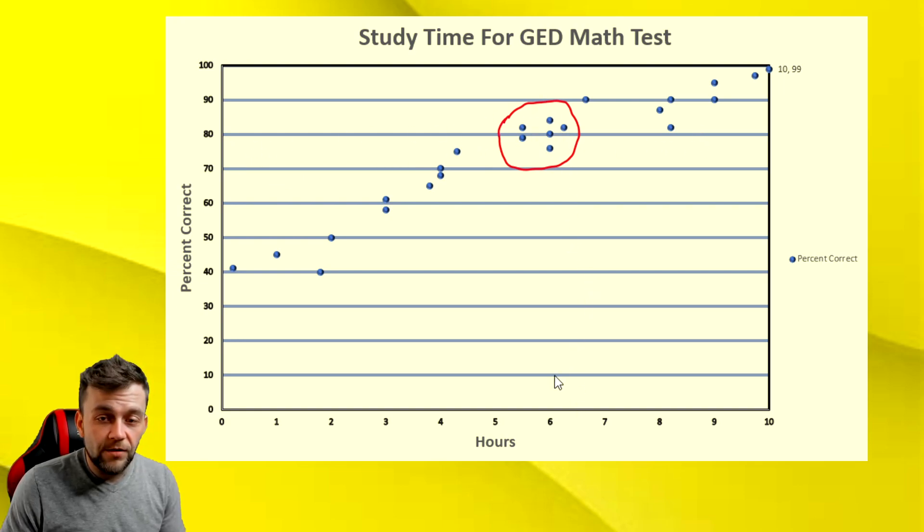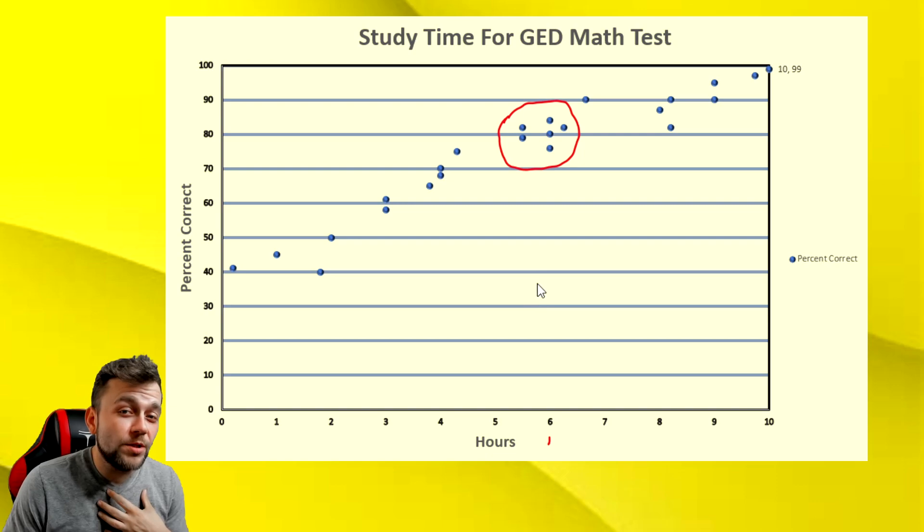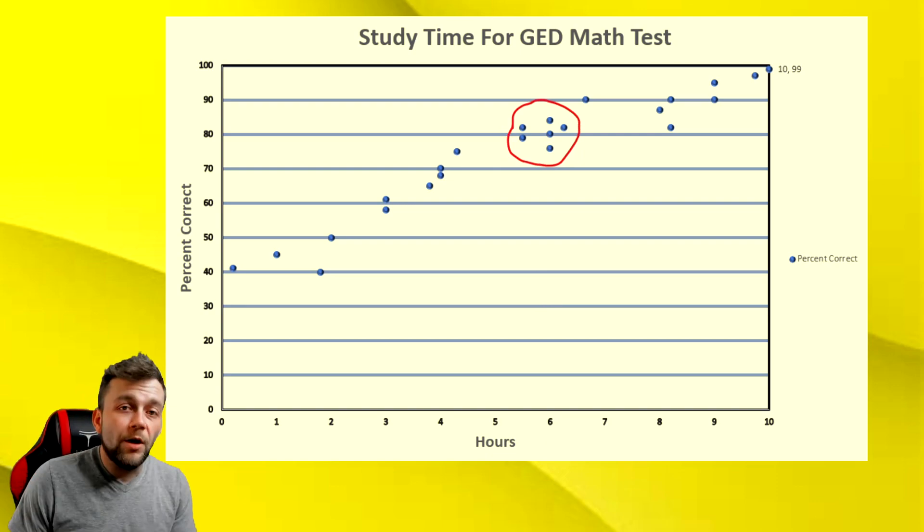Let's circle the area right around that 80 percent mark where most of the scatter points are at. So if we look over here, we have the 80 percent and everything seems to be circulating right around this. We have the most data points in this area, around 80 percent. And it looks like we need to study for six hours to score an 80 percent.